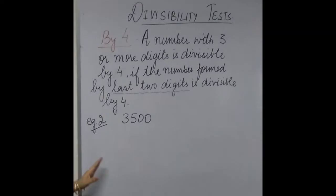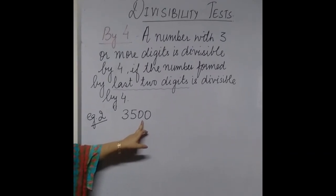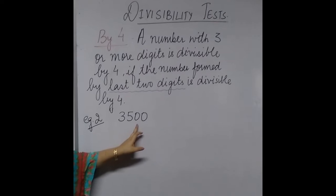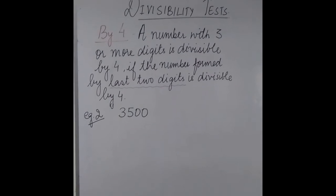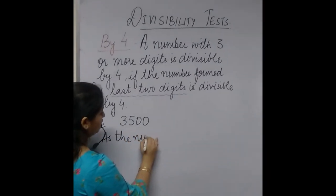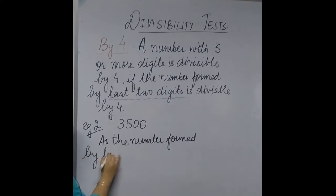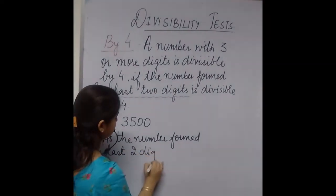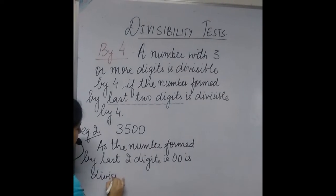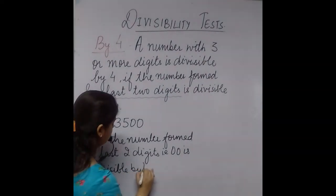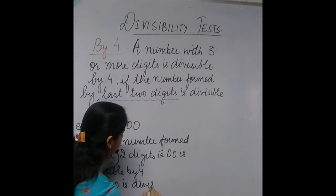For our second example, we have the number 3500. The number formed by the last two digits is 00. Since zero is a multiple of every number, 00 is divisible by 4. Therefore, 3500 is divisible by 4.